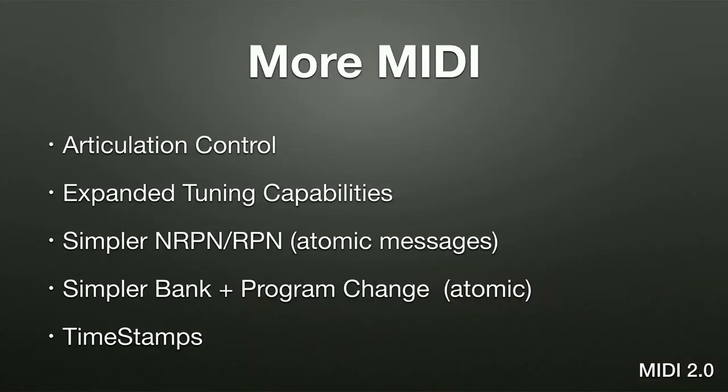The new messages are generally extended versions of existing messages, plus some entirely new ones. Higher resolution data is generally 32-bit in these new messages. There are more channels, more controllers, and per-note controllers are a great expansion of MIDI in 2.0. Per-note pitch bend, articulation control, expanded tuning capabilities for micro-tuning, and much simpler messages for NRPNs and RPNs — instead of sending four messages to get one piece of data, you only send one.